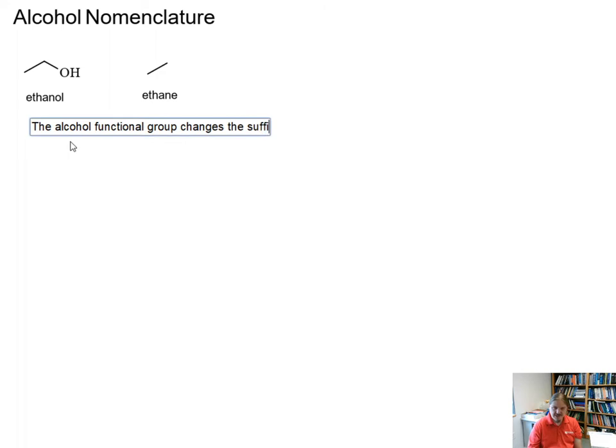We're going to start off with a relatively simple alcohol. The name of this molecule is ethanol. I wanted to start with ethanol as something simple and compare it to the parent alkane, ethane. The alcohol functional group changes the suffix of a name from the -e in ethane to the -ol suffix.